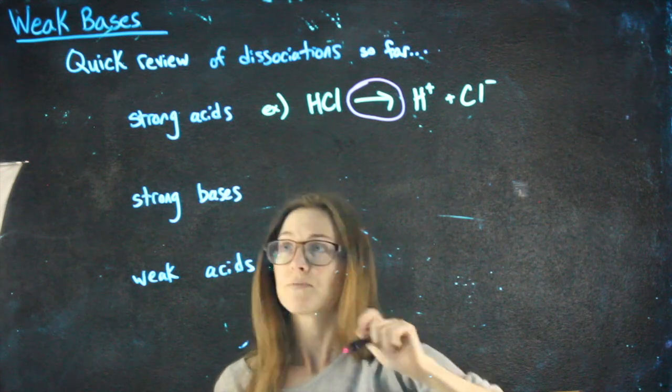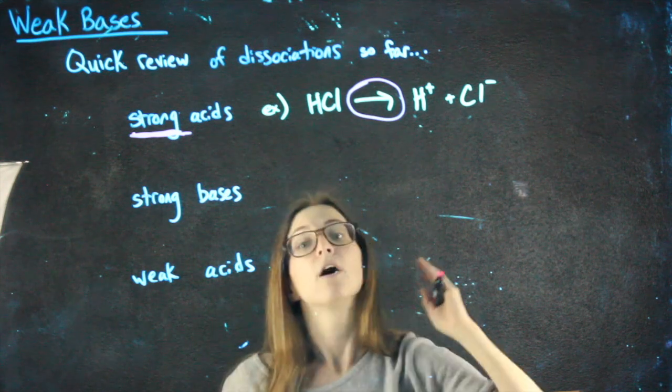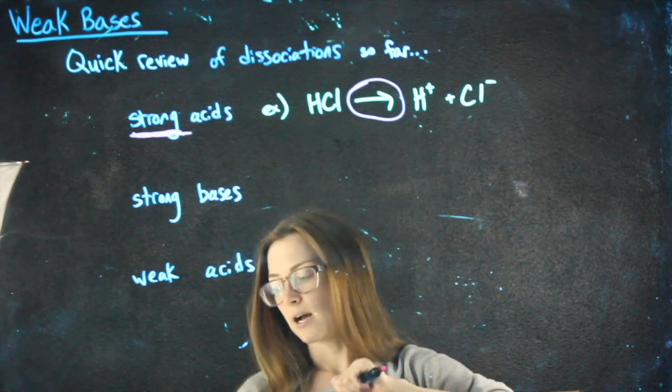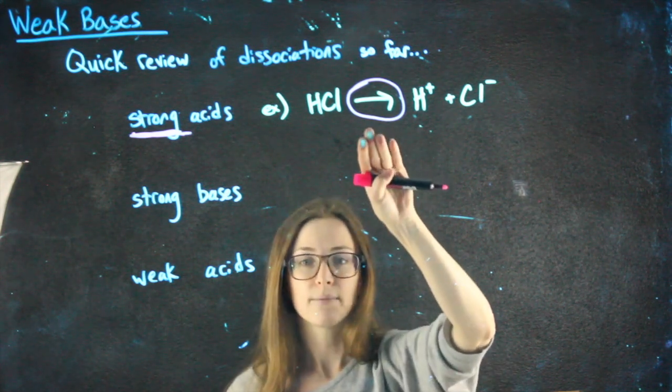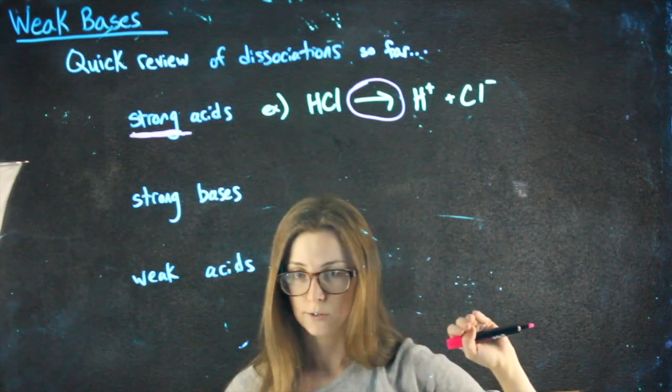Anytime we're dealing with something strong, it should be a single arrow. The reason that matters is that single arrows end up meaning we can use mole ratios, want over given, and we don't have to use ICE charts.